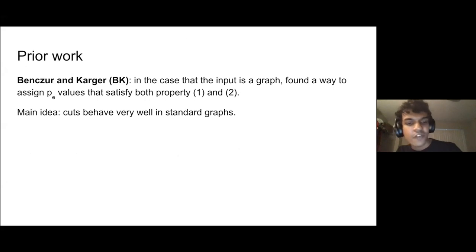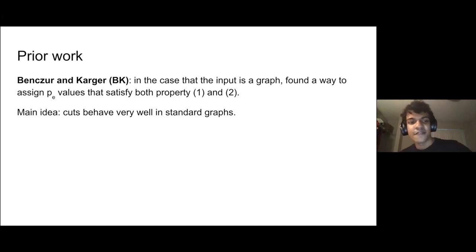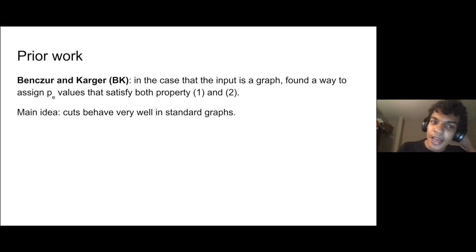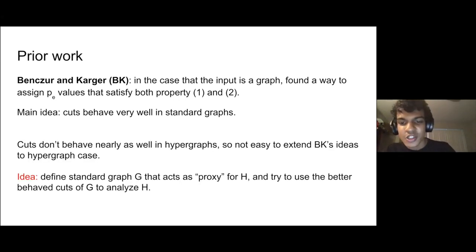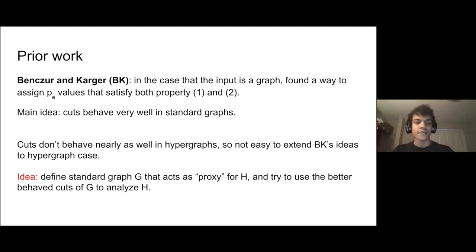That's exactly what Benczúr and Karger did for graphs — they proved that for standard graph input, we can assign probability values satisfying both properties simultaneously. The main idea is that cuts behave really well in standard graphs: there are explicit bounds on the behavior of cuts that are really desirable. However, extending this to hypergraphs doesn't seem easy because those bounds do not hold for hypergraphs — the corresponding bounds for hypergraphs are much worse.